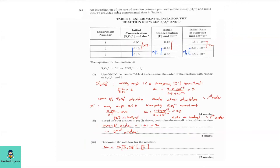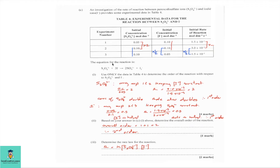Part C — an investigation of the rate of reaction between peroxodisulfate ions and iodide ions provides experimental data in Table 4. We have three experiments with the initial concentration of peroxodisulfate ions, the initial concentration of iodide ions, and the initial rate of reaction. The equation for the reaction is: S₂O₈²⁻ + I⁻ → SO₄²⁻ + I₃⁻. The rate of reaction is dependent on reactant concentrations, so we focus on the reactants.